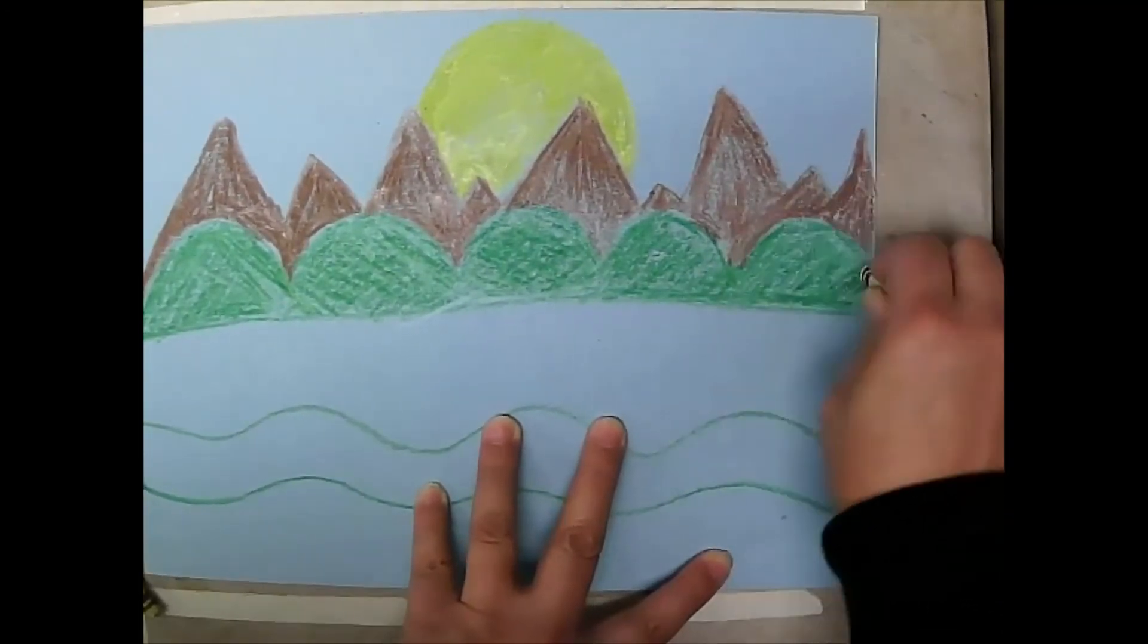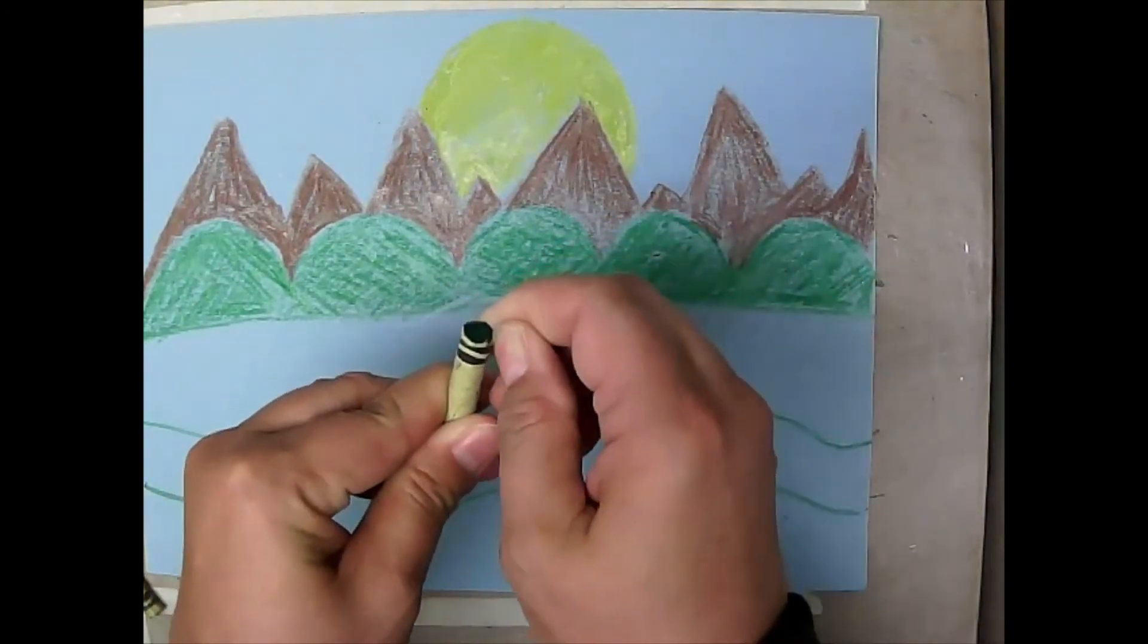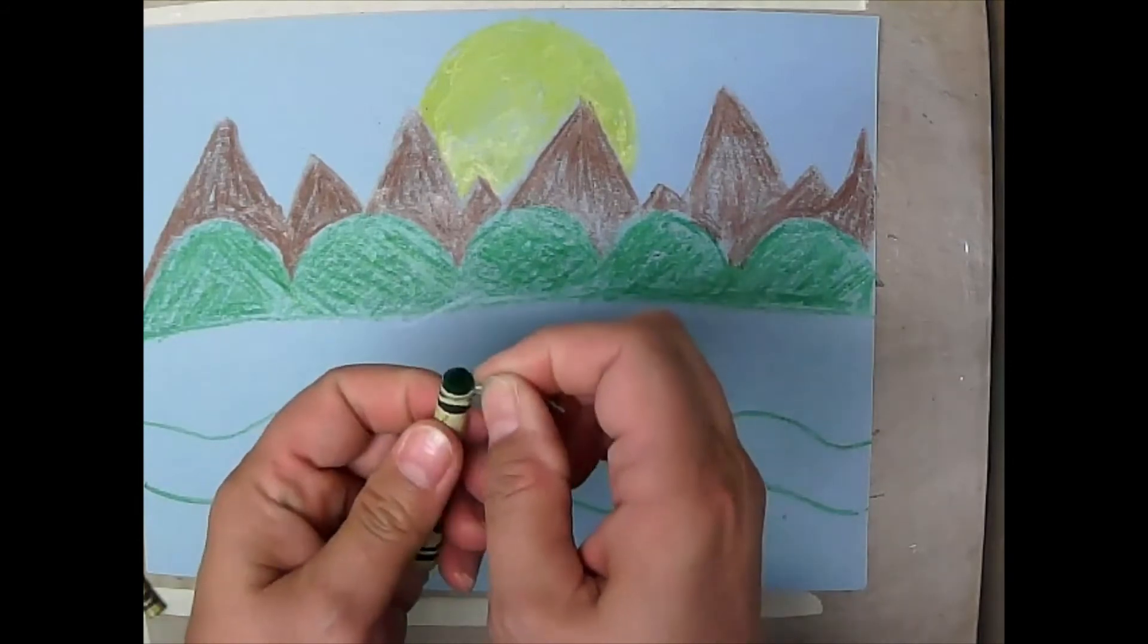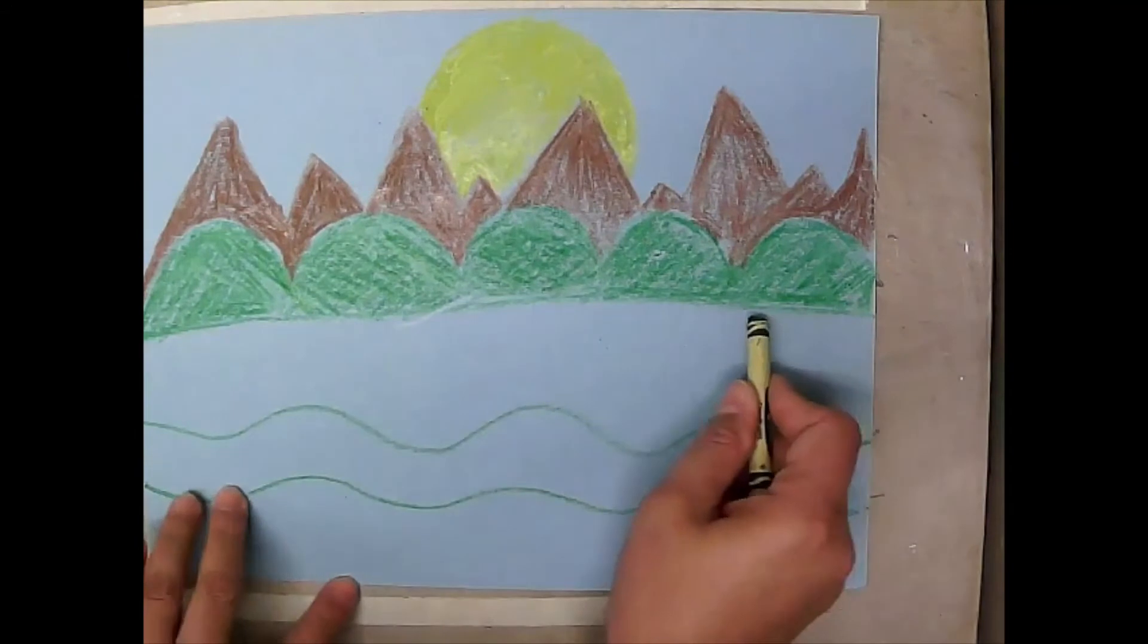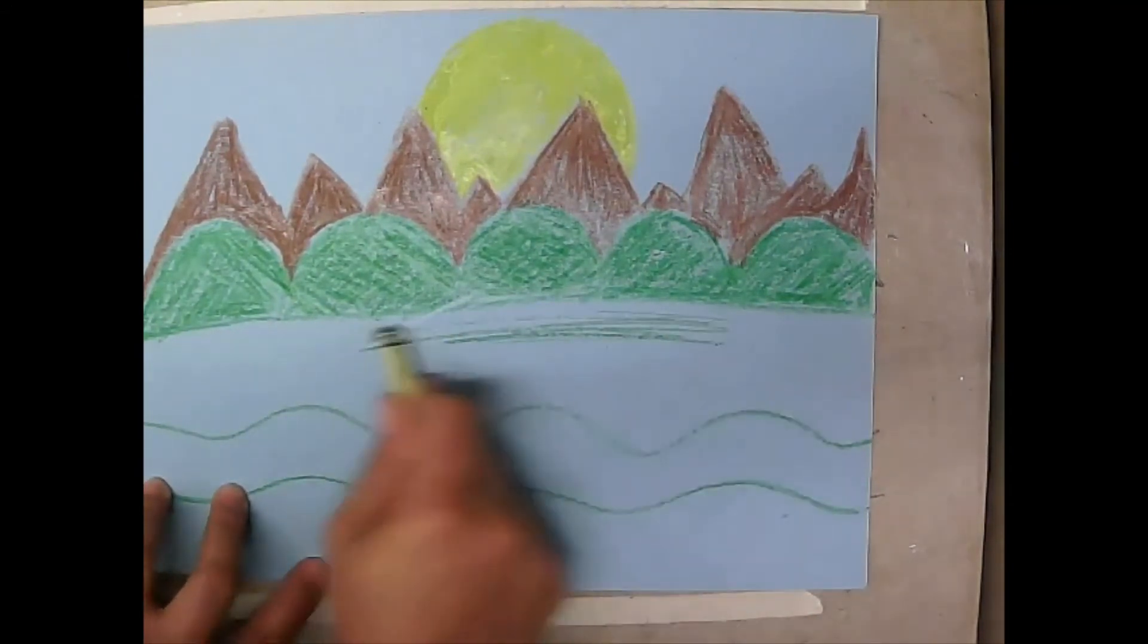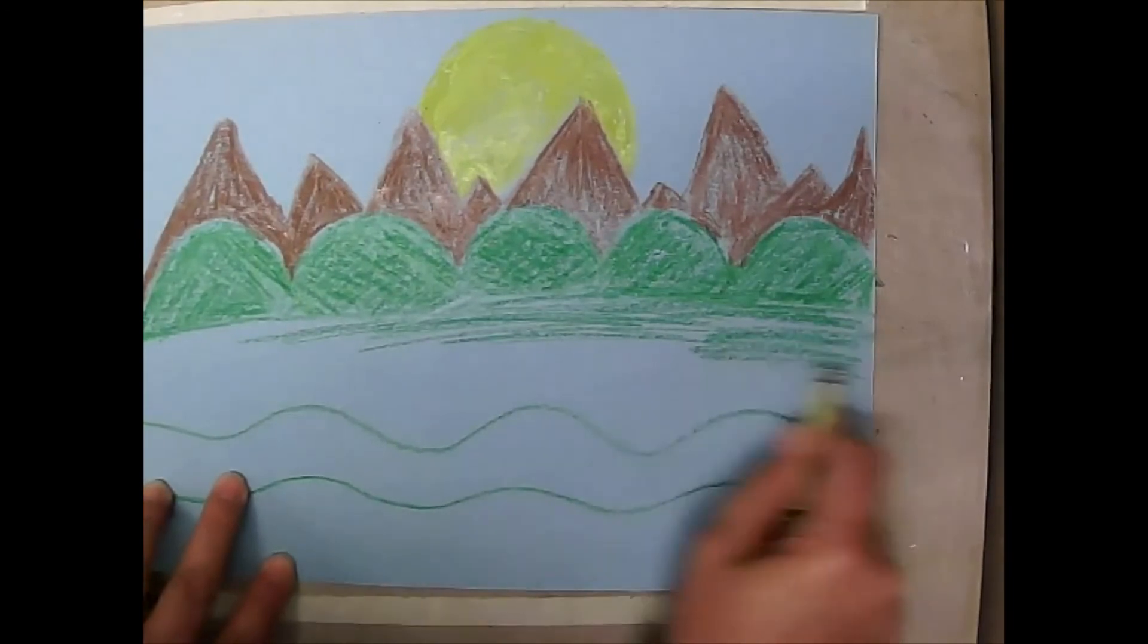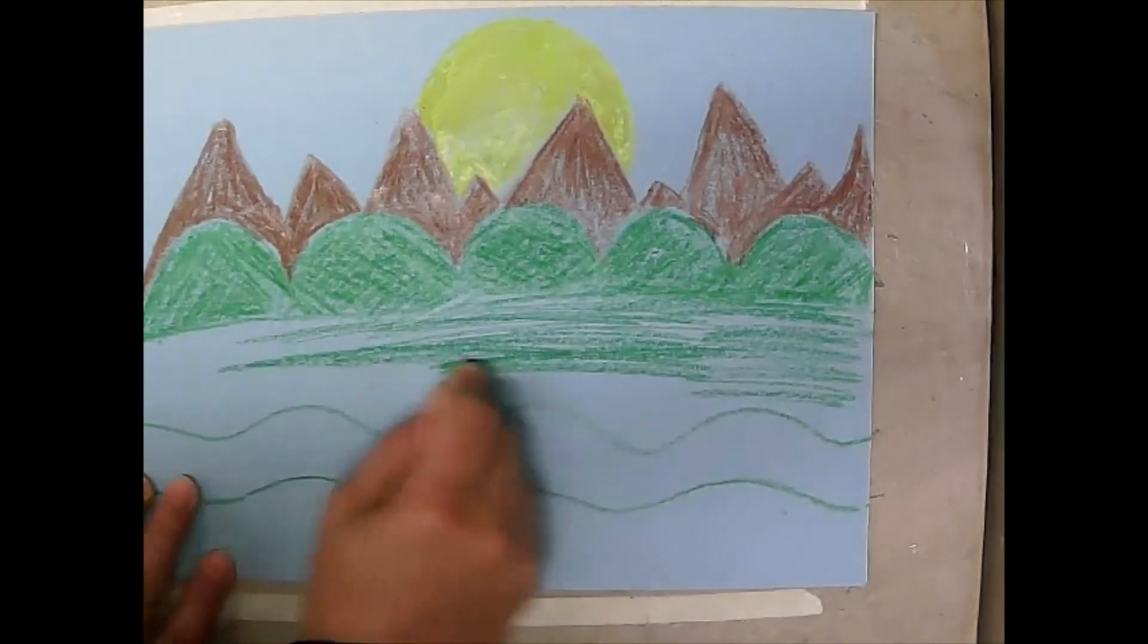If your crayon gets dull, what do you need to do? You need to tear a little bit of the paper, just a tiny bit. Don't take off all the paper. Then you have more crayon. Now I'm going to change directions and go this way with my coloring because it makes these areas look different when we color different directions, doesn't it?